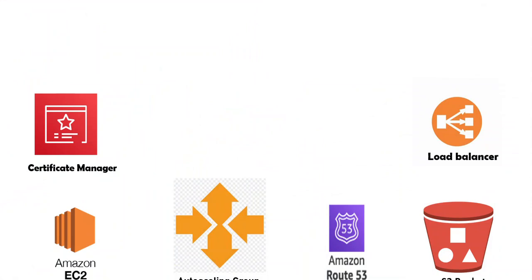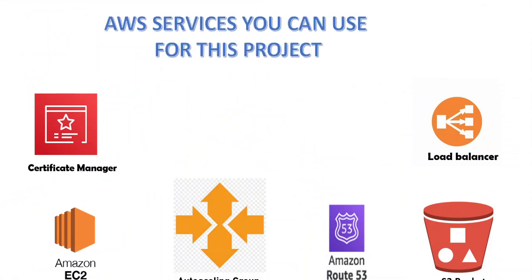This strategy is used when organizations want to move to the cloud quickly with minimal disruptions to the existing architecture or application. Some services you can use while implementing this project include Certificate Manager for your SSL certificate to add more security to your application, Amazon EC2, Auto Scaling Group, Amazon S3, a load balancer, as well as an S3 bucket for your storage.